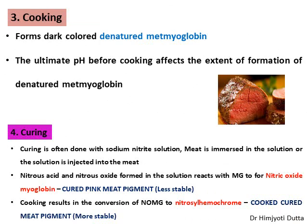As mentioned earlier, cooking causes an irreversible change to the meat pigment, forming stable denatured metmyoglobin. The final pigment in cooked meat will be denatured metmyoglobin, which cannot be reversed back to the original forms. However, the pH of meat before cooking affects its formation — low pH meat easily forms denatured metmyoglobin, while high pH meat requires longer cooking. So the lower the pH, the greater the tendency to form denatured metmyoglobin, and the higher the pH, the longer the cooking time required.